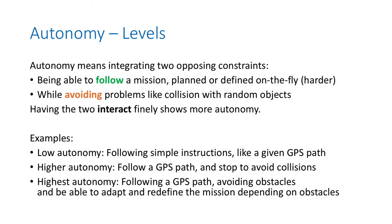Autonomy can be defined as a battle between two constraints. First, you need to follow a mission, and this mission can be planned or defined on the fly by software. The second constraint is avoiding problems, like collision with random objects or behaving appropriately in front of unknown things happening during the flight. So these two subsystems have to interact finely for your drone to be autonomous and smart.